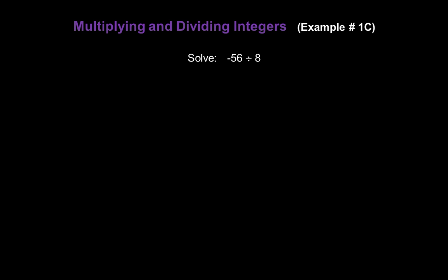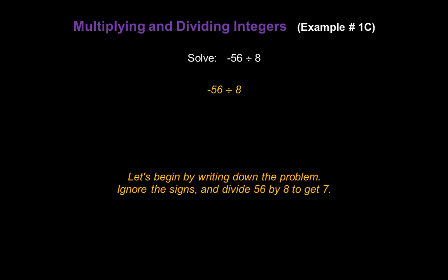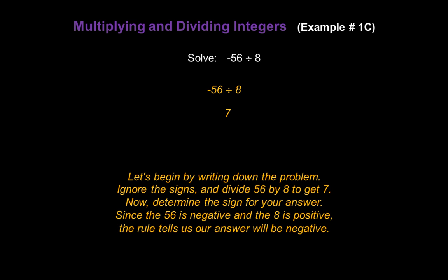Let's solve negative 56 divided by 8. Ignore the sign and divide 56 by 8. We know that gives us 7. Now determine the sign on 7. Since the 56 is negative and the 8 is positive, the rule tells us our answer has to be negative 7.